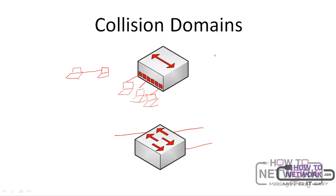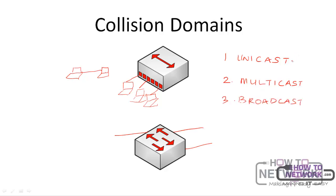Now there are three types of messages that you can send from a computer to another computer. The first type is called a unicast message. The second type is called a multicast message. And the third type is called a broadcast message. For a unicast message, you send from one device to another device. For a multicast message, you send from one device to many computers.